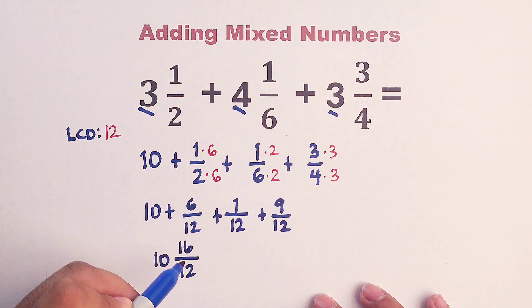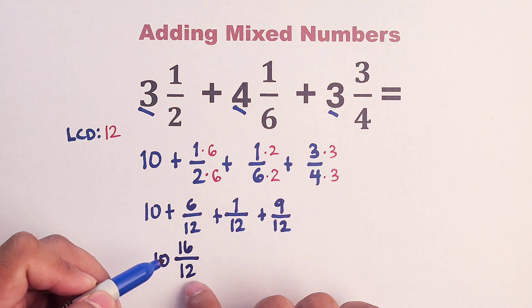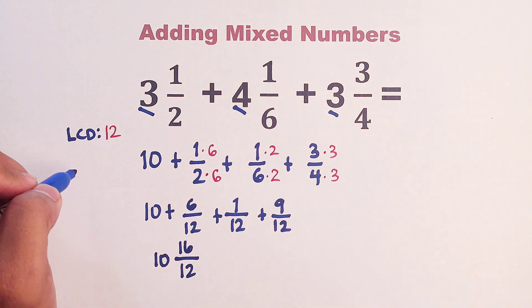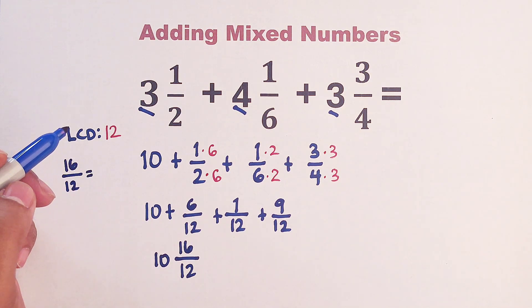Now, guys, as for this fraction, as you can see, this one is an improper fraction. But instead of going directly, I will try to simplify first 16 over 12. 16 over 12 can be simplified as